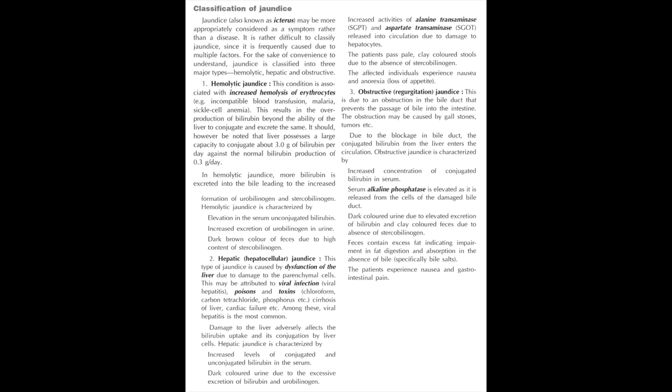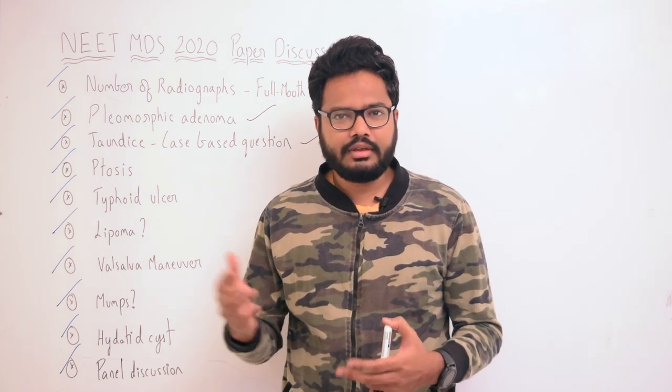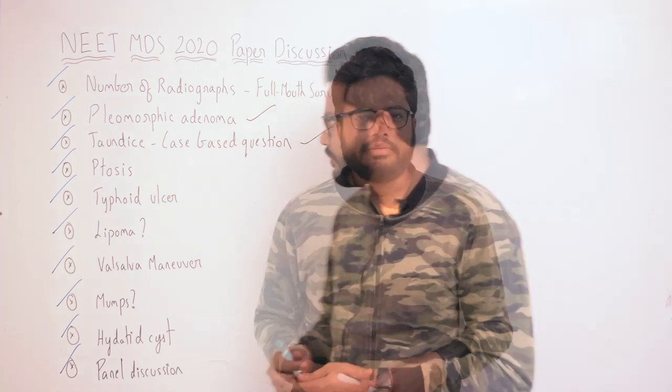In obstructive jaundice, findings include increased concentration of conjugated bilirubin in serum, elevated serum alkaline phosphatase released from cells of the damaged bile duct, dark colored urine due to elevated excretion of bilirubin, and clay-colored feces due to absence of stercobilinogen. Feces also contain excessive fat, indicating impairment in fat digestion and absorption in the absence of bile. Patients also experience nausea and gastrointestinal pain.